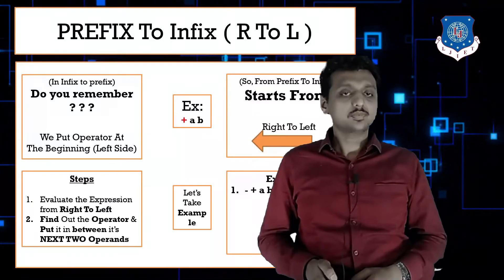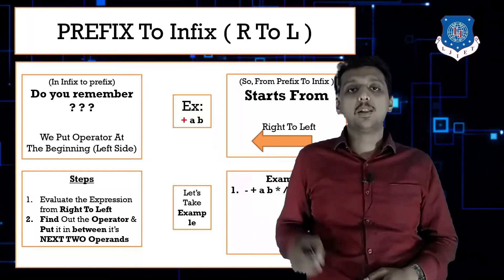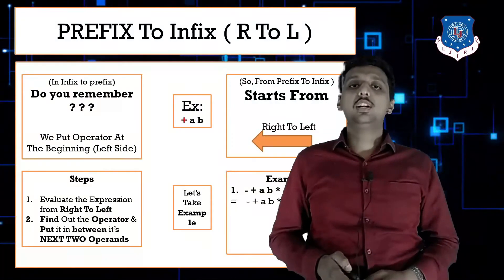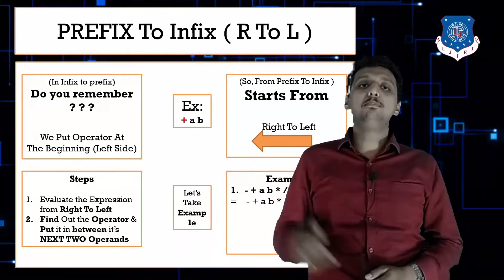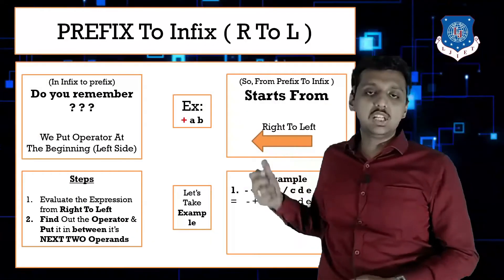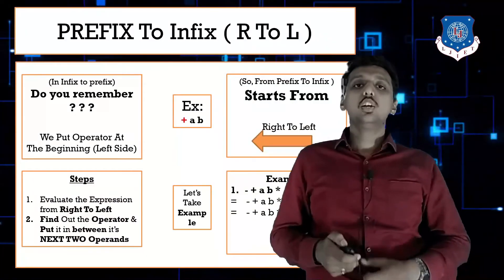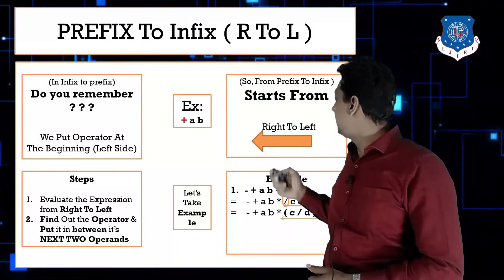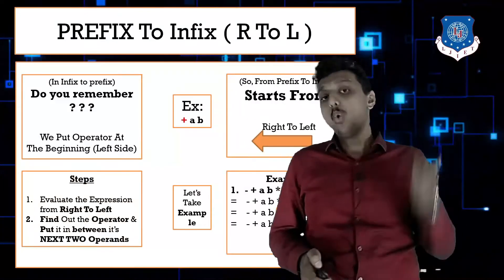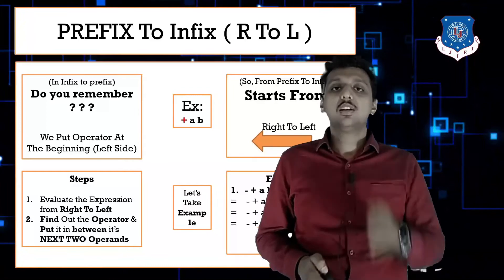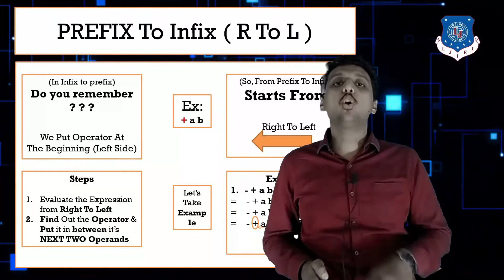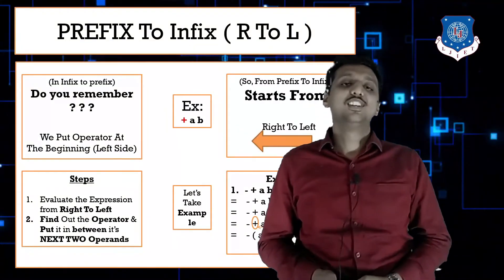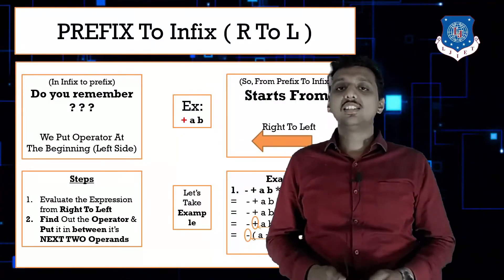For the prefix example: -+ab*÷cde. Traversing right to left, the first operator found is division. Place division between its next two operands, c and d, giving c/d. Next, going right to left, star is found — place it between c/d and e, giving c/d*e. Then plus is found; place it between a and b, giving a+b. Finally, only minus remains: the answer is a+b - c/d*e.